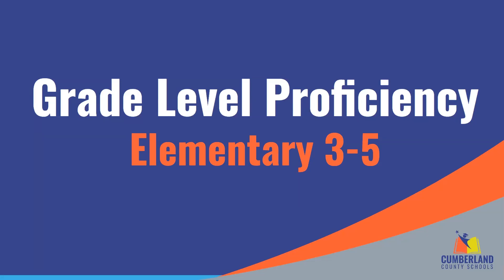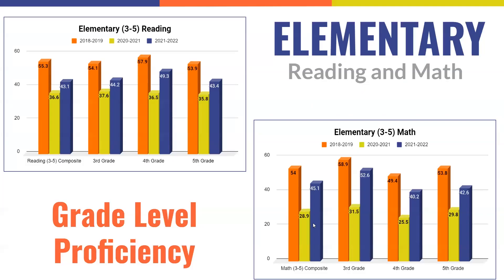Next, we drill down to grade-level data beginning with elementary schools. The graph design is the same: orange represents pre-pandemic 2018-19, yellow is during the pandemic, and blue is year one of recovery efforts. The graph on the top left represents elementary reading levels for grades 3 through 5, and on the bottom right the graph represents math levels. The pattern is very much like the district performance composite — there was a drop at each grade level and subject area in proficiency, but we are on our way back up towards pre-pandemic levels.